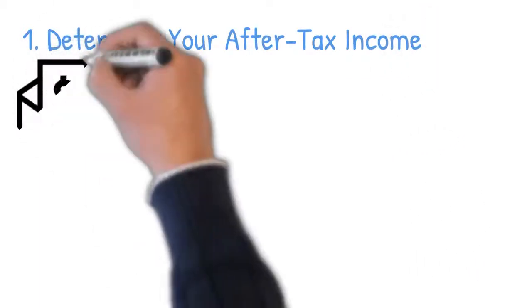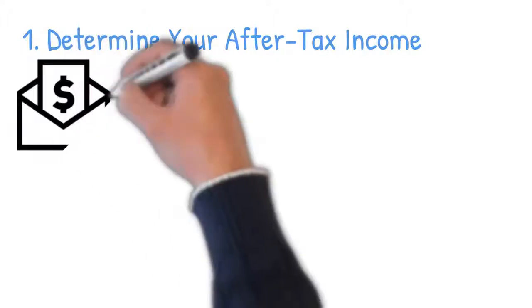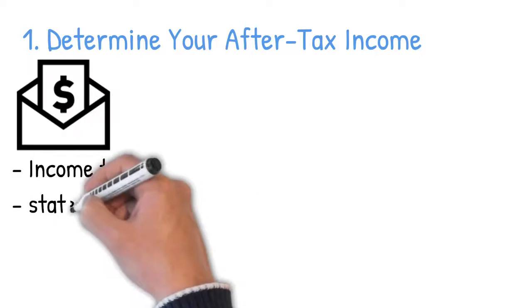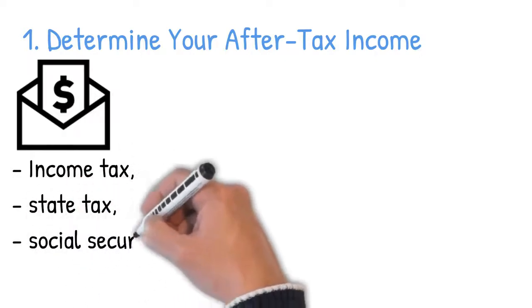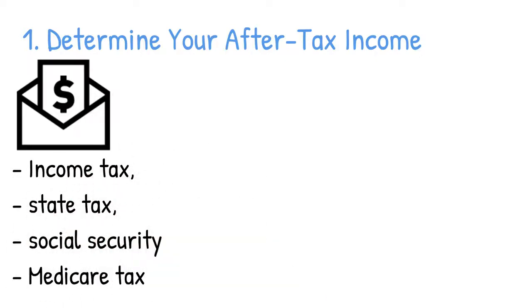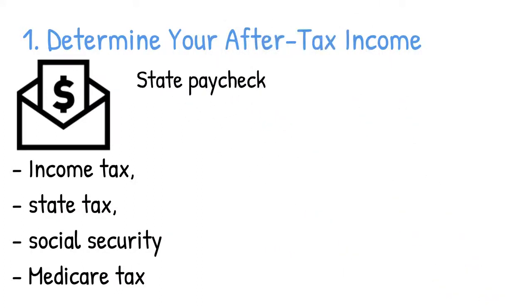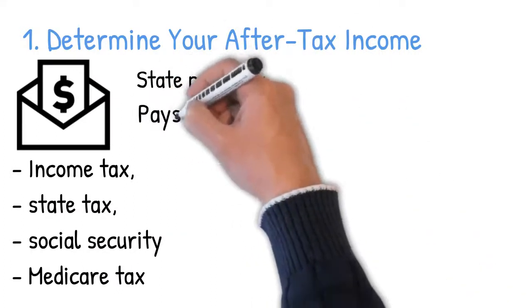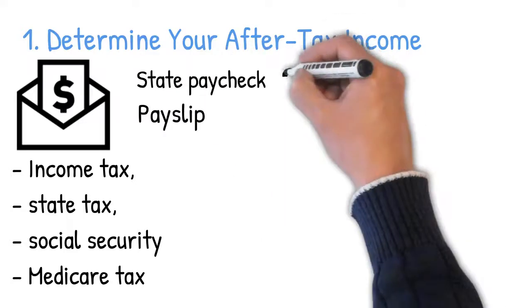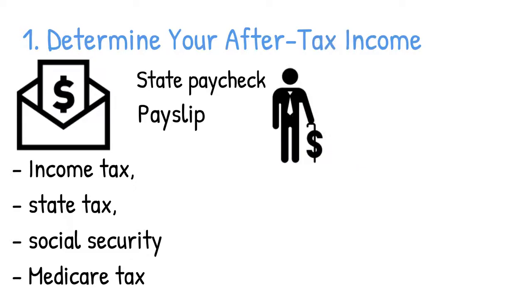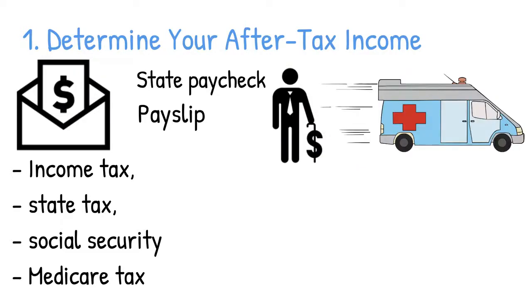Your after-tax income is what's left on your paycheck after deducting taxes. That includes income tax, state tax, social security tax, and Medicare tax. It's easier to determine your after-tax income if you are on a state paycheck. Your after-tax income is right there on your payslip. Remember to add back deductions like retirement and healthcare deductions if they've been taken out.